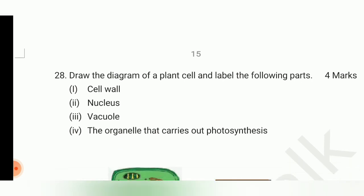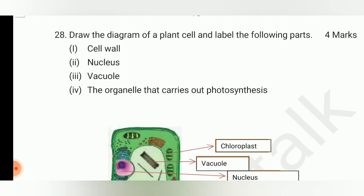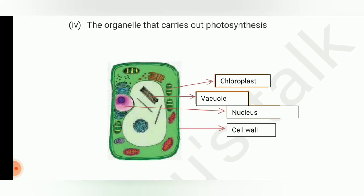Draw the diagram of a plant cell and label the following parts: cell wall, nucleus, vacuole, and the organelle that carries out photosynthesis. The fourth part asks for the function — the organelle that carries out photosynthesis is the chloroplast. Draw and label all these organelles in the plant cell diagram.